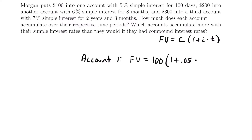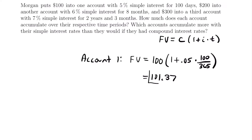The easiest way to convert days into years is to know that a regular year has 365 days. So we write t equals 100 divided by 365. We'll have the interest rate multiplied by 100 over 365 — that is our time in years. Even though it is less than a year, we represent it as a fraction. Plugging this into the calculator, remembering to multiply the interest rate by time before adding one, this equals $101.37 — how much she accumulates in her first account over 100 days.